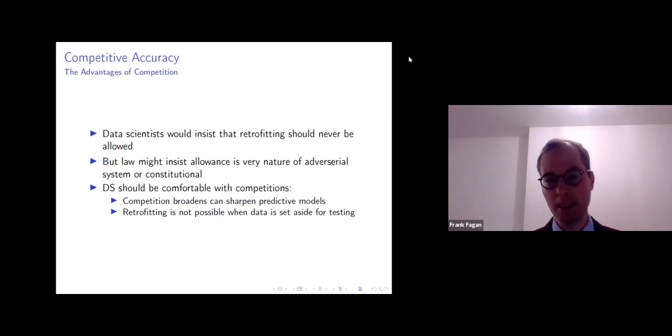So data scientists clearly would insist that retrofitting should never be allowed because the data should be set aside in a lockbox for this type of diagnostic testing. But this insight's harder to bring to law because law might insist that allowing variables like fifth letter or something unique to me is the very nature of our adversarial justice system, or it's somehow constitutional. But in any case, the data scientists we argue in the paper should be comfortable with our proposition because what competition does is it sharpens these predictive models. Retrofitting is simply not possible when data is set aside for testing.